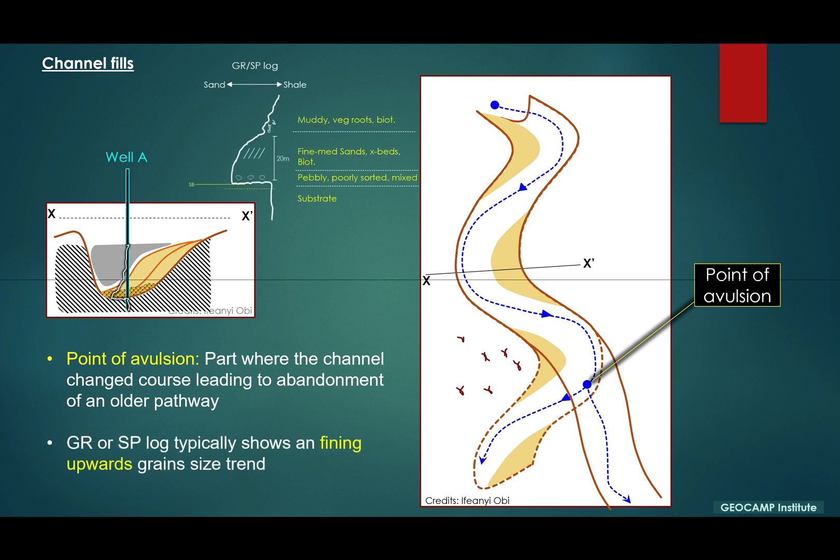Now if I put a well on this section from the top to the bottom, what I'm going to see in the log is going to look like this. At the bottom part, you'll have lots of poorly sorted pebbly materials, which are called lag deposits. The middle section will have more fine to medium sandstone, crossbedded, bioturbated, with various sedimentary structures. And then the upper part will be more muddy, sometimes with rootlets or vegetation. These are a typical signature for a fining-upward fluvial channel complex.